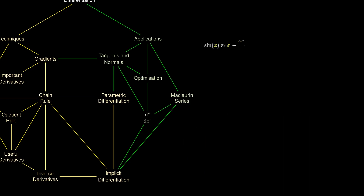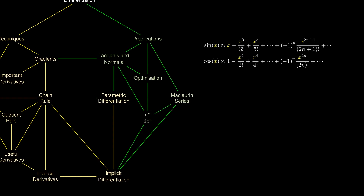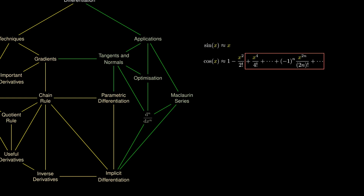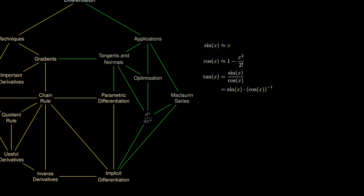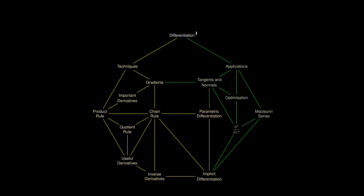Since we are approximating sine and cosine with long polynomials, when x is sufficiently small, any power of x higher than 2 becomes negligible. So we can approximate sin(x) ≈ x, and cos(x) ≈ 1 − x²/2. This helps us obtain a small angle approximation for tan(x). Writing sine over cosine as sine times cosine to the negative 1, substituting our approximations, and noting that the Maclaurin expansion of (1 − x²/2)⁻¹ gives us, after carrying out the algebra with higher powers negligible, that tan(x) can be approximated by x itself. These ideas give us an entire toolkit of differentiation, in a nutshell.